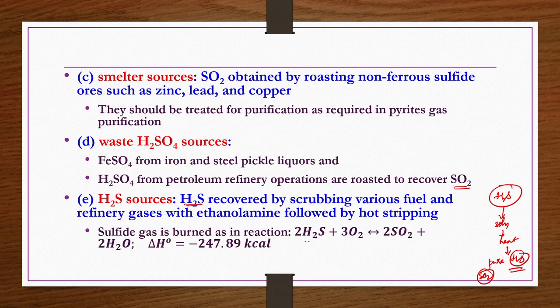For example, H2S oxidation gives sulphur dioxide along with water. So there is a source of sulphur here as well. Even without elemental sulphur from mining, sulphur or sulphur dioxide sources are available from pyrite ores, smelting processes, waste H2SO4, and H2S sources.